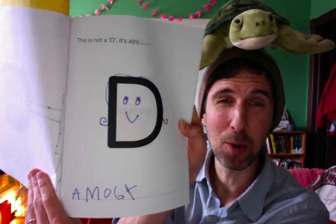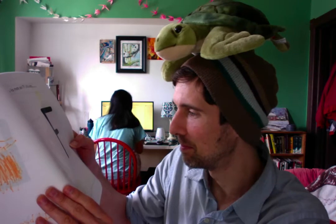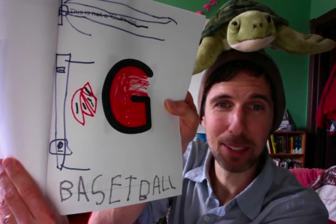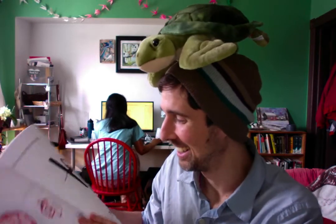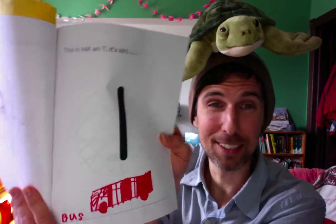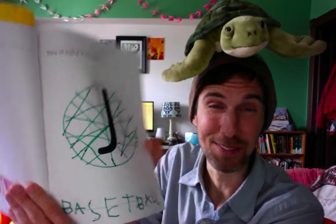This is not a D, it's an emoji. This is not an E, it's a bumblebee. To each their own. This is not an F, it's a building — you can see the little roof on top. This is not a G, it's a basketball. A lot of sports fans in there. This is not an H, it's a prison. This is not an I, it's a bus. This is not a J, it's another basketball. A lot of basketballs in there.